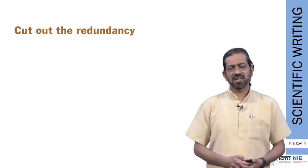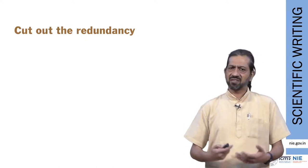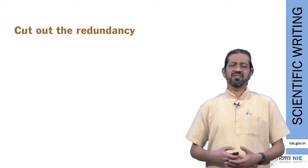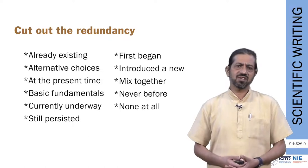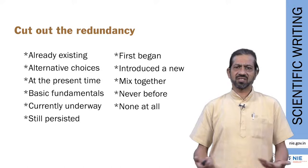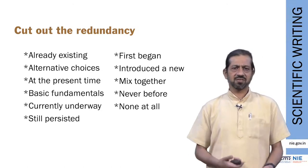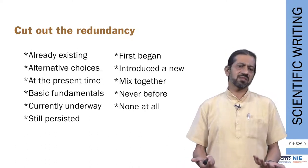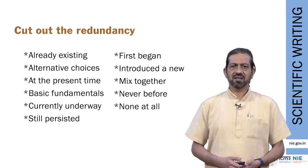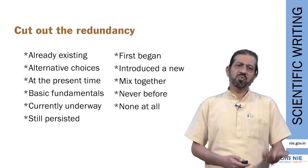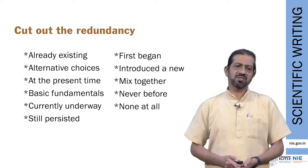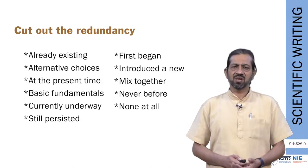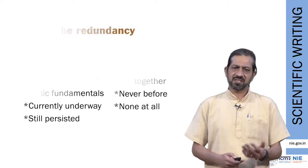We need to be mindful when writing a scientific manuscript to avoid redundant words. Examples of redundant phrases include 'already existing,' 'alternative choices,' 'at the present time,' 'basic fundamentals,' 'currently underway,' 'still persisted,' and 'none at all.' Two or more words being used to give the same message can always be replaced with smaller, more specific words.